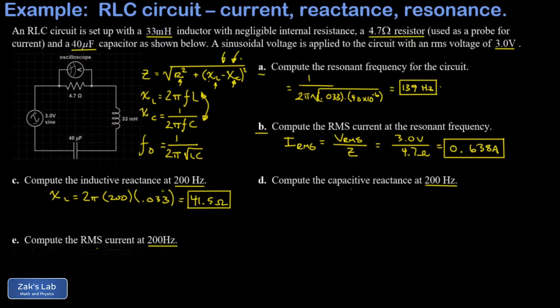Then we want the capacitive reactance. And we plug into the formula for that. So we have 1 over 2π times the frequency we're driving this thing at, 200 Hertz, times our capacitance, which was 40 microfarads or 40 times 10 to the negative 6. We run the numbers on this and get 19.9 Ohms for the reactance.